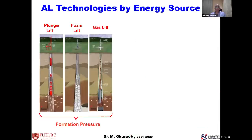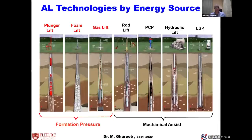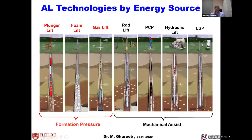For artificial lift, there are two main categories: mechanical assist or pump assist — running a device inside the well — or gas injection, using natural gas, foam, or sometimes air for shallow water wells, or plunger lift using gas assist of the well plus the mechanical element. We'll try to cover most of these in the next coming lectures.